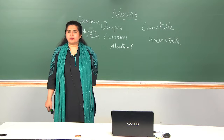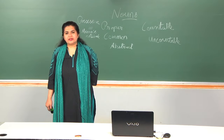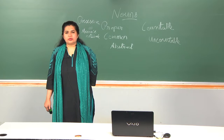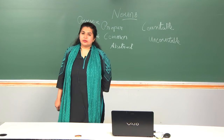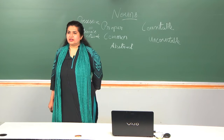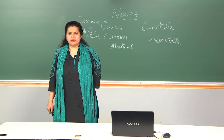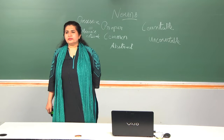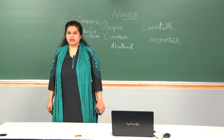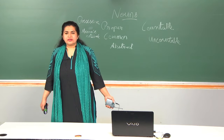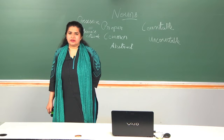A proper noun is a name used for an individual person, place, or organization — for example, the UNO, written in all capitals. Abstract nouns refer to ideas, concepts, and emotions you cannot taste, feel, touch, or hear — for example, honesty in 'honesty is the best policy.' You cannot touch honesty or have a specific amount of it; it is a non-tangible emotion. These are abstract nouns — you cannot see, taste, touch, smell, or hear them.